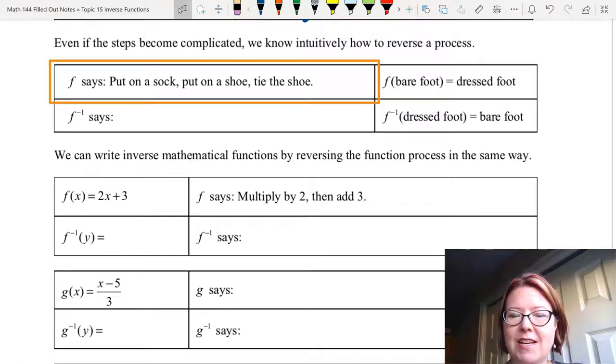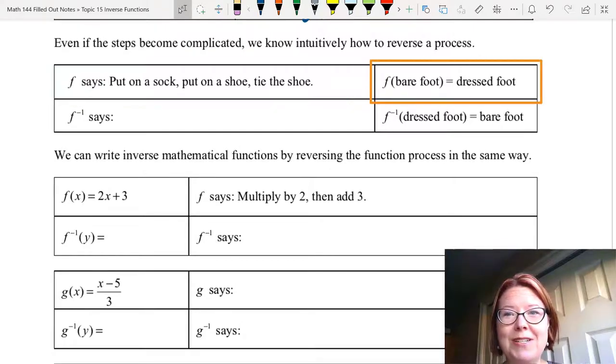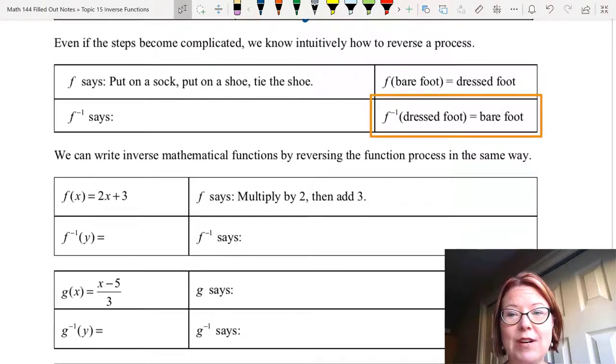if the process f says put on a sock, put on a shoe, tie the shoe, we've input our barefoot and output a dressed foot. If we want to reverse that, then we're going to input a dressed foot and output a barefoot.